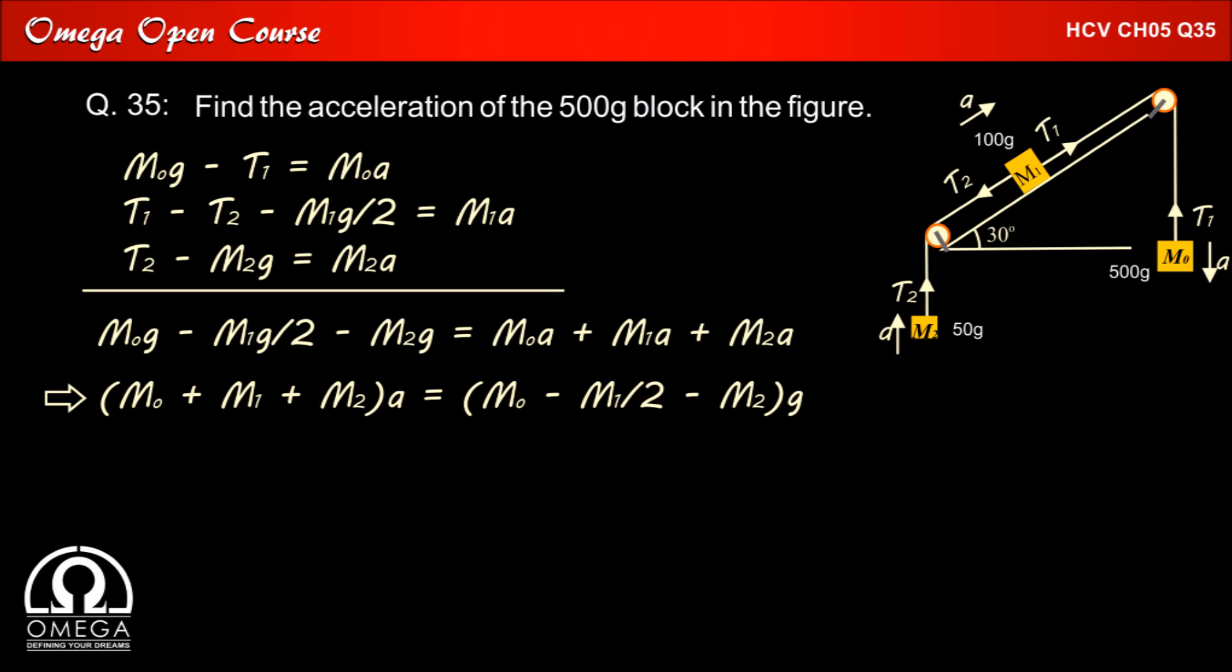Which implies (M0 + M1 + M2)a = (M0 - M1/2 - M2)g. Which implies A = [(M0 - M1/2 - M2)g] / (M0 + M1 + M2).